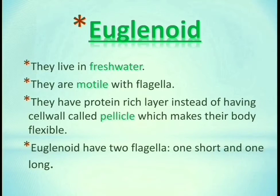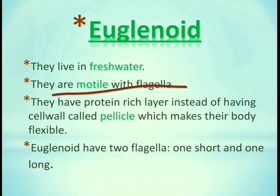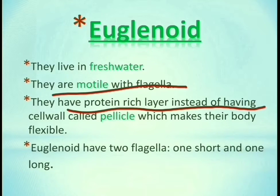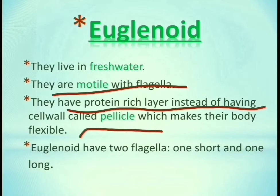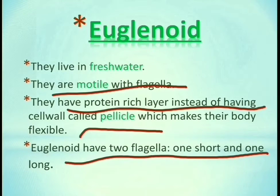Next, we will read about euglenoids. They live in fresh water — their habitat is fresh water. They can move with the beating of their flagella. They have a protein layer instead of a cell wall, which is called a pellicle, which makes their body flexible.